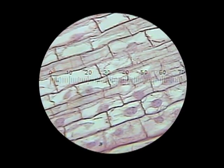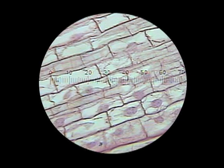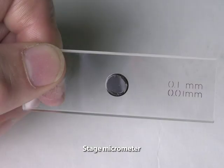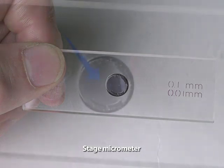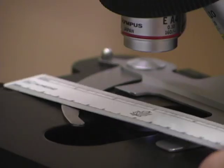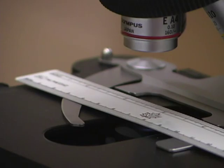The divisions on an ocular micrometer must be calibrated at each magnification setting of the microscope to a stage micrometer. A stage micrometer is nothing more than a very fine ruler. In fact, one can use a millimeter ruler to calibrate most magnifications.